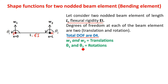Following the procedure of bar element as well as CST element, the very first step is to write down the displacement function, which is written with the help of degrees of freedom as well as the Pascal triangle. One important point for beam element is that rotation is not a primary unknown. Theta is not a primary unknown — theta can be determined if deflection W is known, since theta is equal to dw/dx. So in bending element, we always write the displacement function only for deflection, not for rotation.